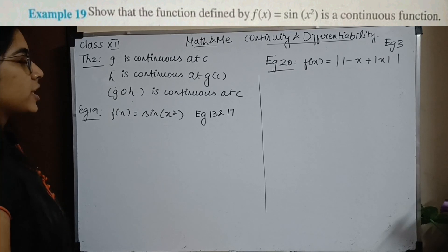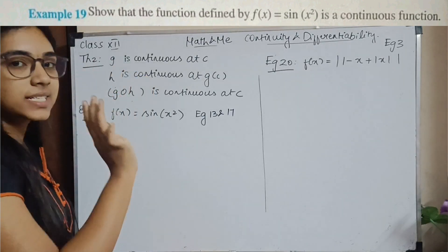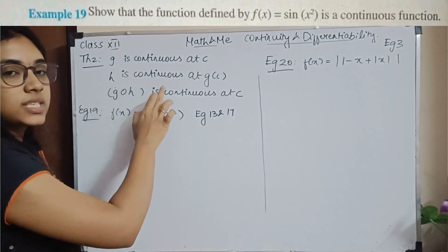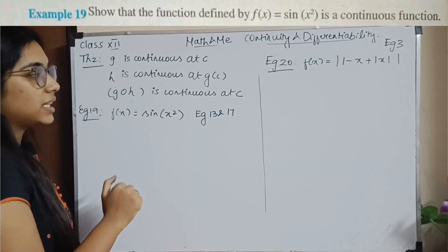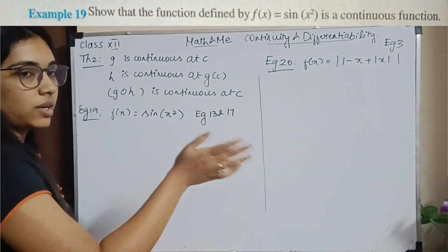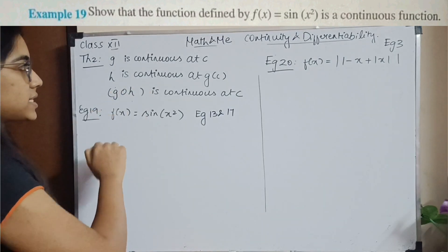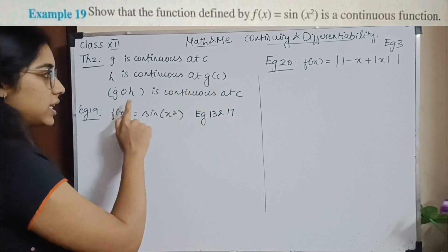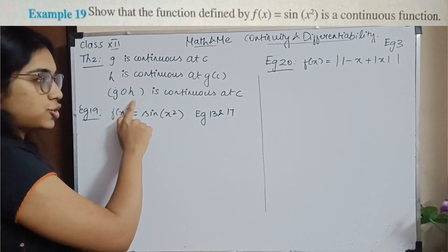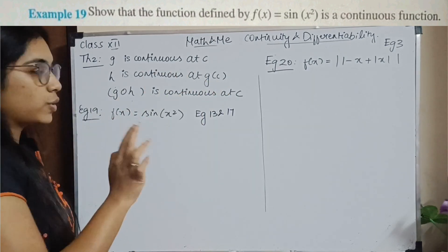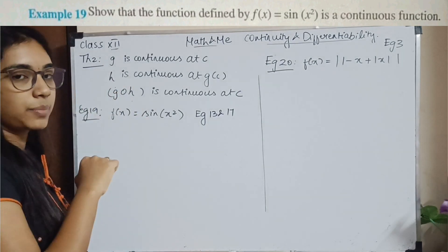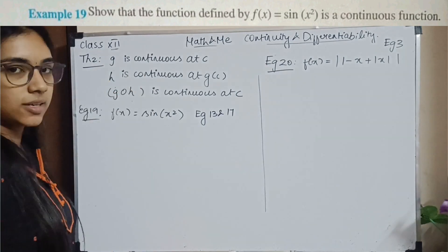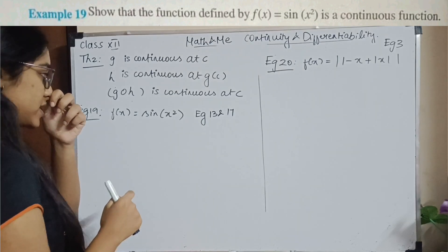Moving on to Theorem 2: G is continuous at C and H is continuous at G(C). This will be clearer when solving example questions. If G is continuous at C and H is continuous at G(C), then the composite function H of G is continuous at C. The notation G∘H is used — you put a hollow circle.